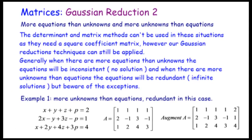Welcome to Math with Bob. Today we look at matrices and Gaussian reduction, and today we're looking at an extension of the previous Gaussian reduction where there were equal numbers of equations and unknowns, into the situation where there are actually more equations than unknowns and also more unknowns than equations.